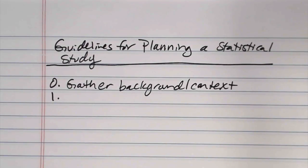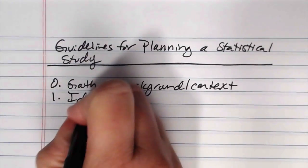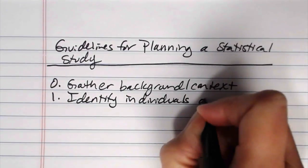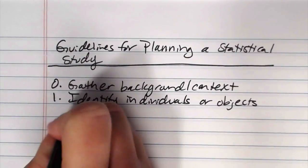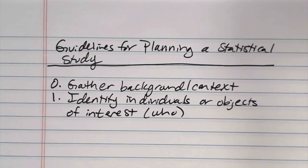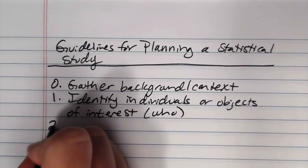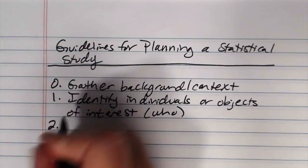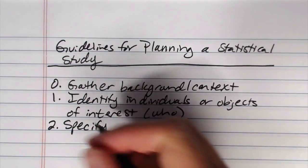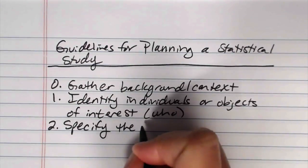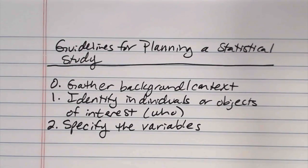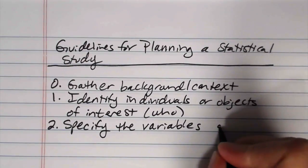Then step one is to identify individuals or objects of interest. So this is the who are you going to include in your study. Step two, we want to specify the variables.